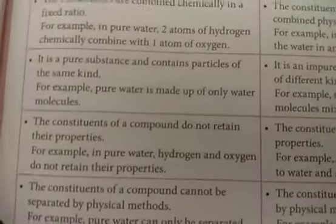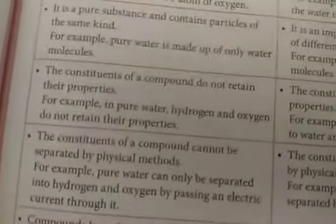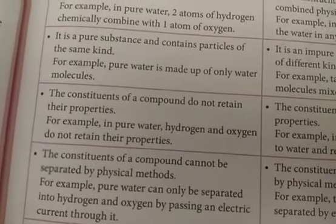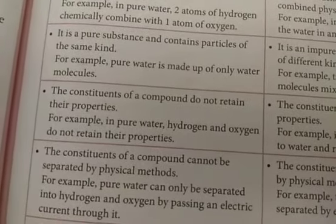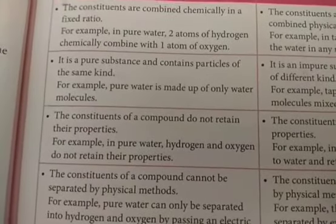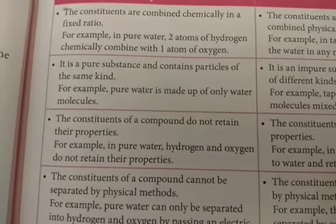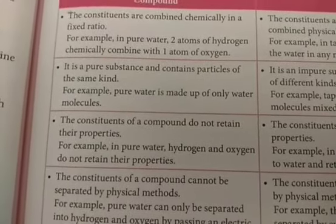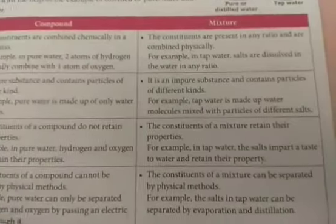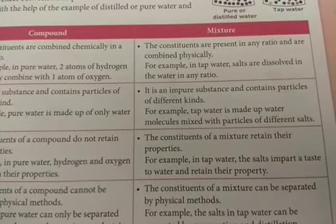In compounds, the constituents do not retain their individual properties. For example, in pure water, hydrogen and oxygen do not retain their properties — hydrogen is inflammable and oxygen is a supporter of combustion, but when they chemically combine to form water, water is used to extinguish fire, meaning the properties have changed.